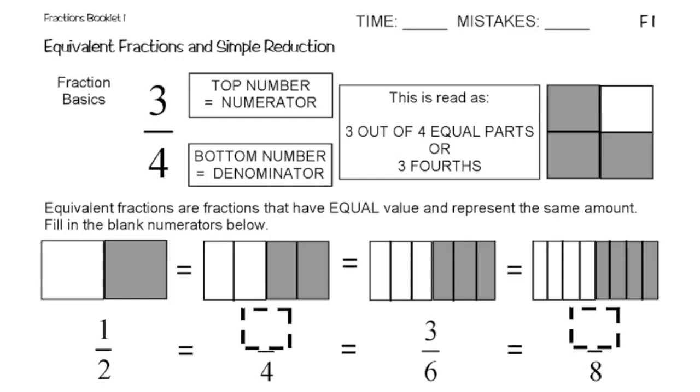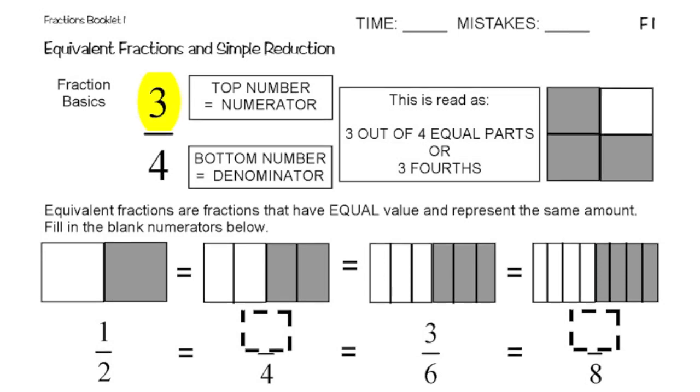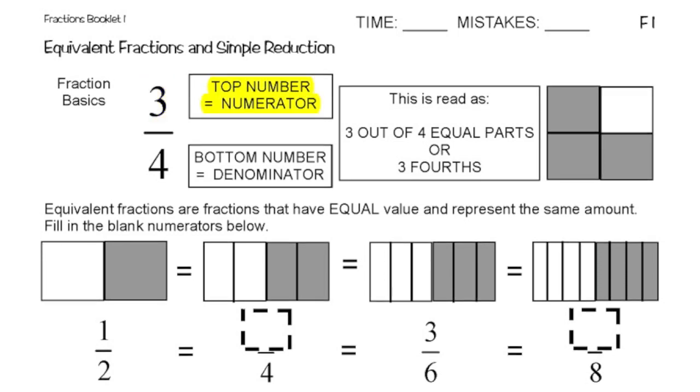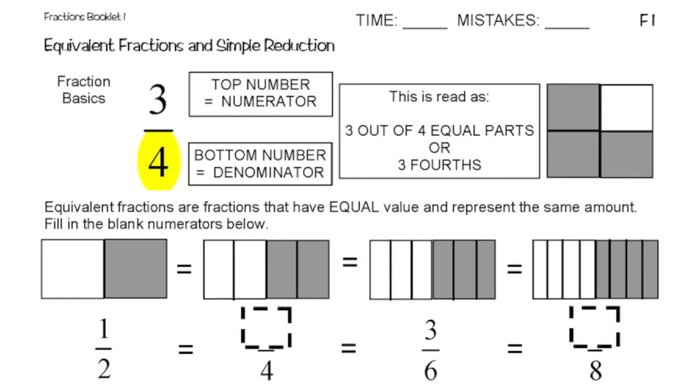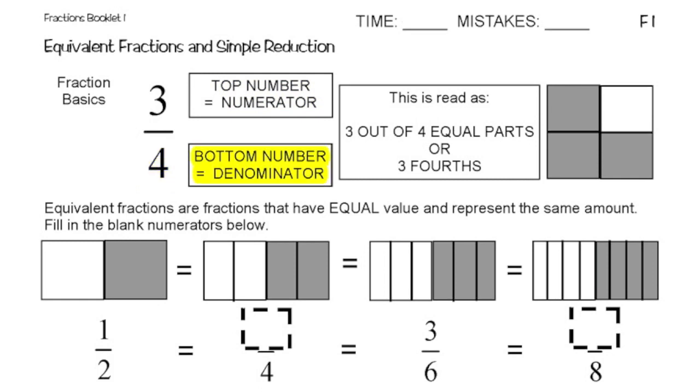I'm going to go ahead and basically go over some basics of fractions. The top number in any fraction is called the numerator, and the bottom number in any fraction is called the denominator. You would read this as 3 out of 4 equal parts, because in the example we have 3 fourths, or you'd actually say it as 3 fourths. It's 3 out of the 4 are shaded.